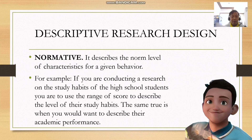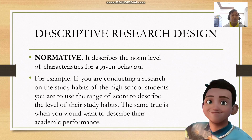Lastly, we have the normative design. It describes the norm level of characteristics for a given behavior. For example, if you are conducting research on the study habits of high school students, you use a range of scores to describe the level of their study habit. The same is true when you want to describe their academic performance.